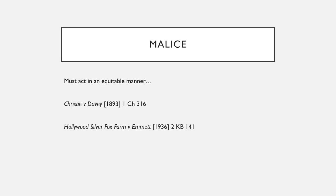Next we're looking at malice. To get an injunction it's an equitable remedy, so to get an equitable remedy you have to act in an equitable manner. In Christie v Davey, the defendant taught piano and the claimant, their neighbour, in response to the noise started beating trays, shrieking, and whistling — and it was held they couldn't get an injunction because they acted inequitably. Hollywood Silver Fox Farm is quite similar: the defendant discharged guns so the foxes on the other side refused to breed, would miscarry, and would kill their young — clearly not acting in an equitable manner.